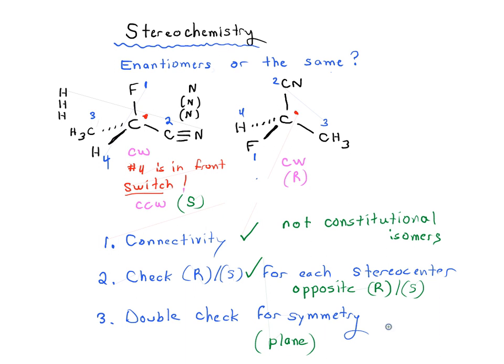There's just one last thing we need to check to make sure that these two molecules are enantiomers. We need to double check for symmetry - actually a plane of symmetry. And in this case it's not possible. Why not? Well, we only have one stereocenter. You'll see that planes of symmetry sometimes give rise to meso compounds, and that's only a factor where we have two or more stereocenters.